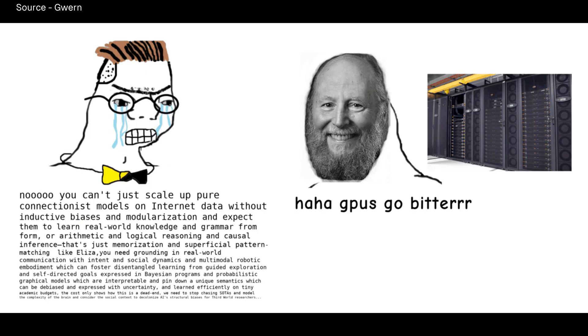But this raises questions. If intelligence can emerge simply from scaling up pattern recognition, what does that say about human intelligence? Are our own minds just incredibly sophisticated pattern matchers? And if we can create human-level artificial intelligence simply by making networks bigger, should we?